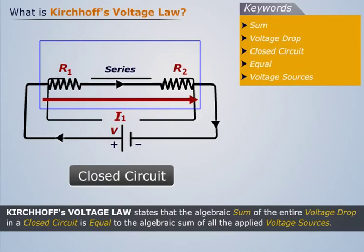But the voltage drop across each of them will be different. Let the voltage drop across R1 be V1 and that across R2 be V2.